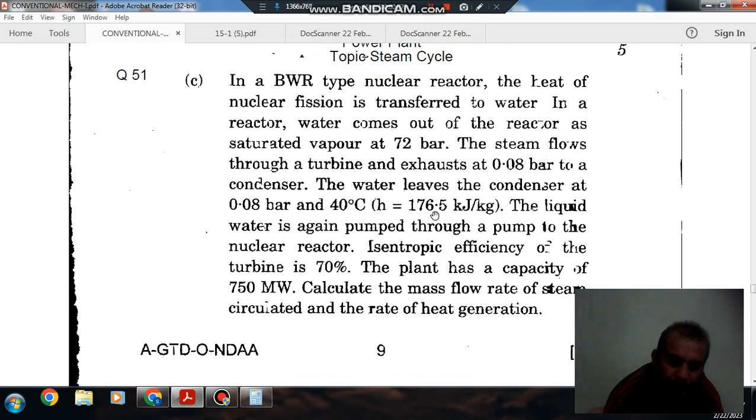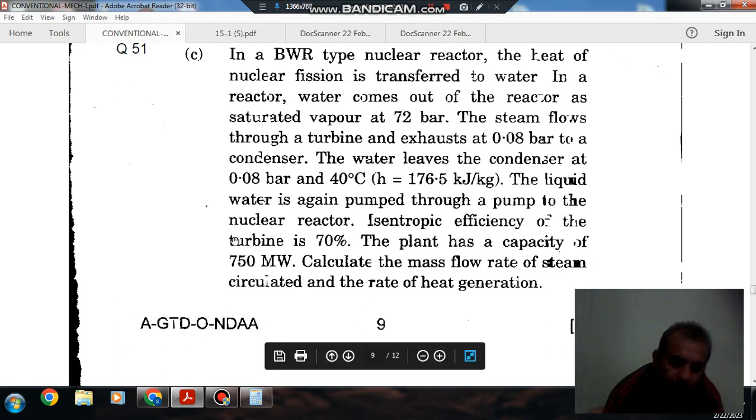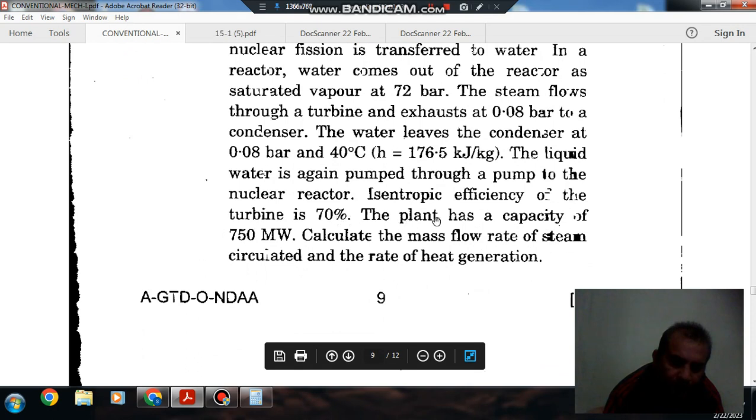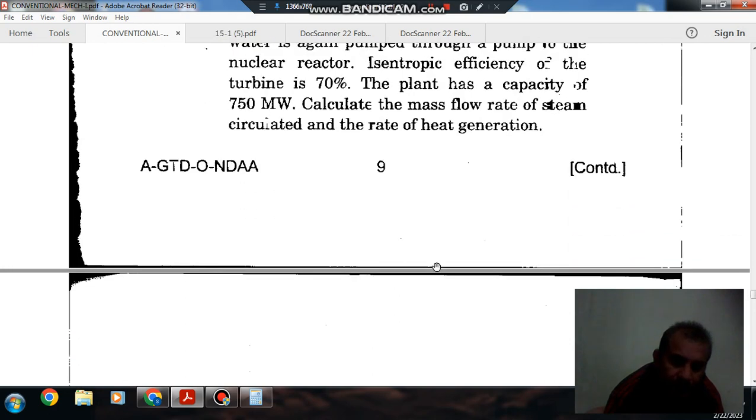The water leaves the condenser at 0.08 bar, and the liquid water is again pumped through a pump to the nuclear reactor. The isentropic efficiency of the turbine is 70%. The plant has a capacity of 750 megawatts. Calculate the mass flow rate of steam circulated and the rate of heat generation.